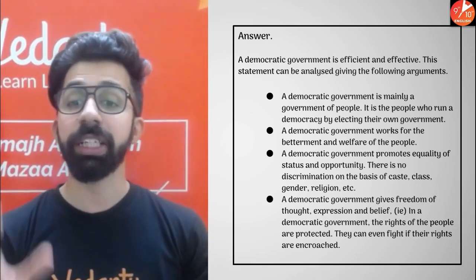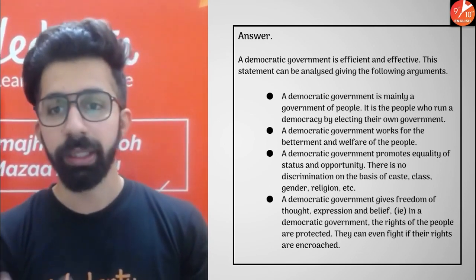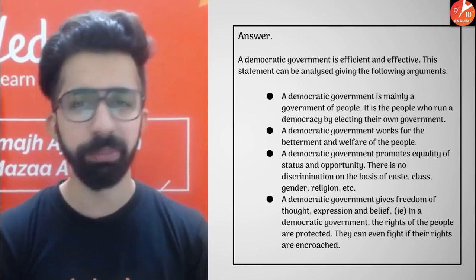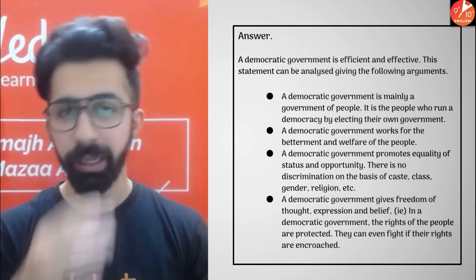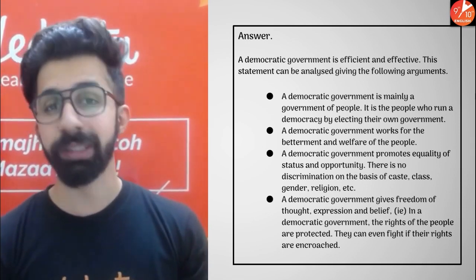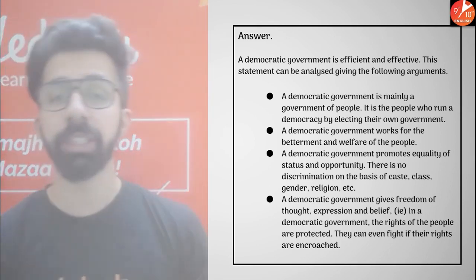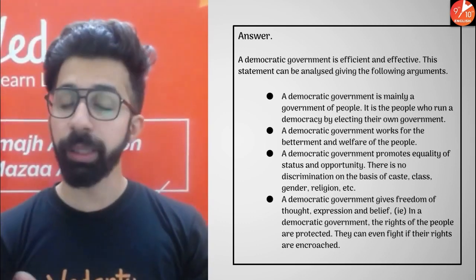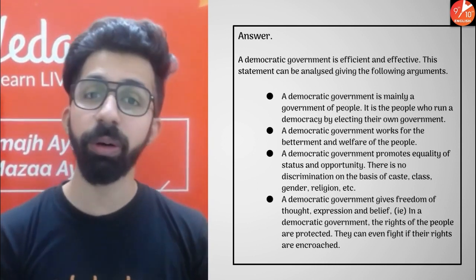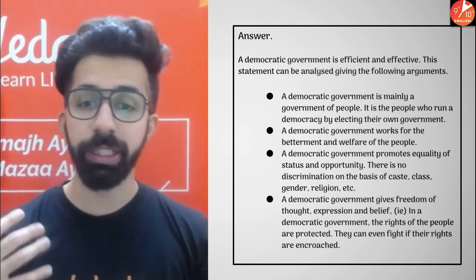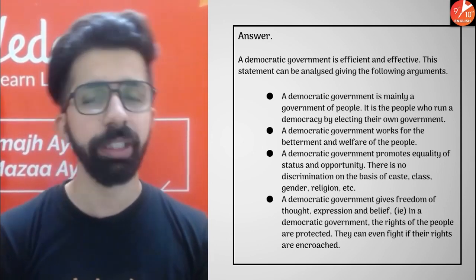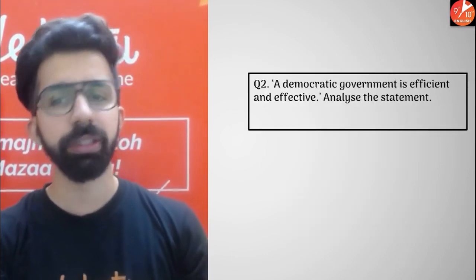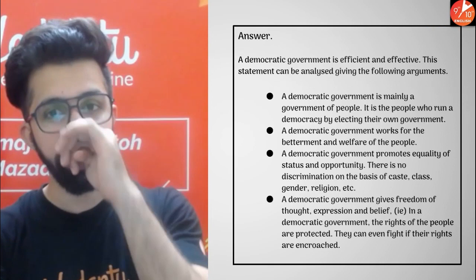A democratic government promotes equality of status and opportunity — there is no discrimination on the basis of caste, class, gender, religion, place of birth, or financial status. Be it voting rights given to citizens once they turn 18 years, or the opportunities given to children. A democratic government also gives freedom of thought, freedom of expressing our opinion, and the right of people to be protected — right of belief and many other things. This is how democratic government is more efficient and more effective.